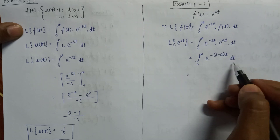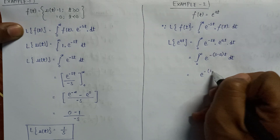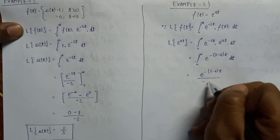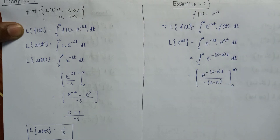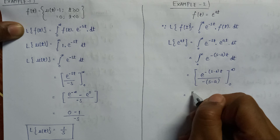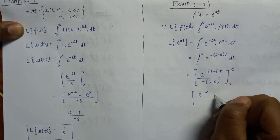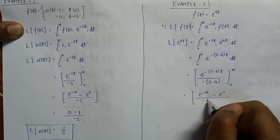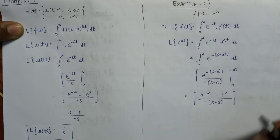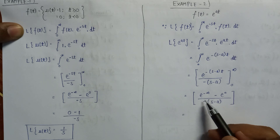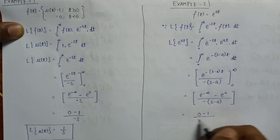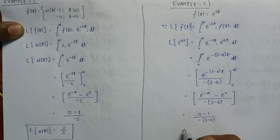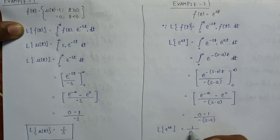On taking the integration of this exponential term we get e to the power minus (s minus a)t over minus (s minus a), with limits from 0 to infinite. On putting the limits, e to the power minus infinite equals 0 and e to the power 0 equals 1. So we get 0 minus 1 over minus (s minus a), which gives the Laplace transform of e to the power at equals 1 over (s minus a).